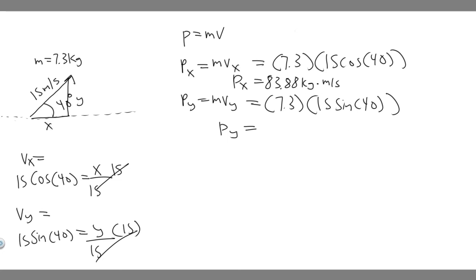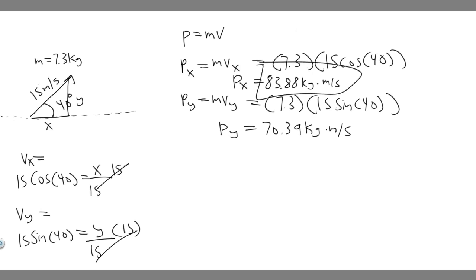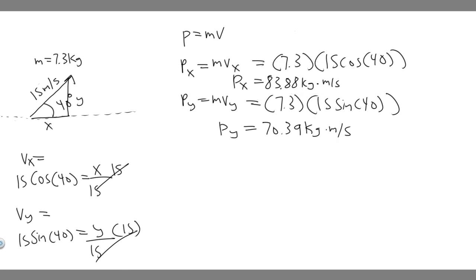And py = 7.3 × 15 × sin(40°) gives about 70.39 kilogram meters per second, with the same units. These are the initial horizontal and vertical components of the momentum — this is the initial speed at which it's released. So 83.88 kg·m/s is the horizontal component and 70.39 kg·m/s is the vertical component.